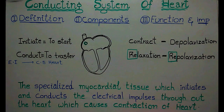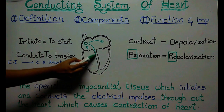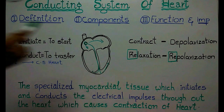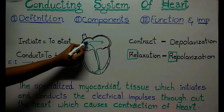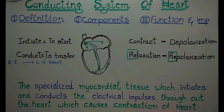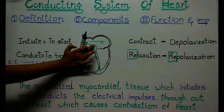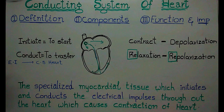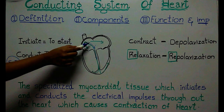After starting, this tissue conducts those electric impulses throughout the heart through a specific pathway. For example, if the impulse is in a particular area, then that part of the heart goes into a state of contraction. When this impulse moves downwards or moves away from that place, that particular part goes into a state of relaxation. So contraction and relaxation are brought about by electric impulses.